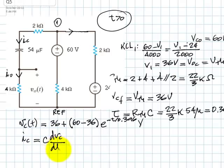So we have Vc as a function of time. We differentiate and multiply times C, that is 54 micro. That multiplies the derivative of this term.